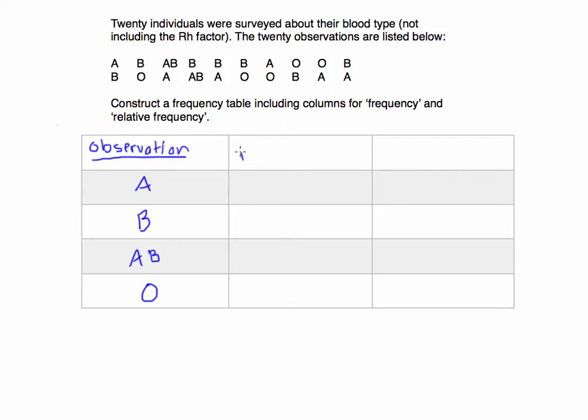Next we want to look at the frequencies - the number of times each of those observations appears. And then we're going to look at the relative frequency. This is going to be a percentage, but it's usually listed as a decimal, so it's a percentage in decimal form.